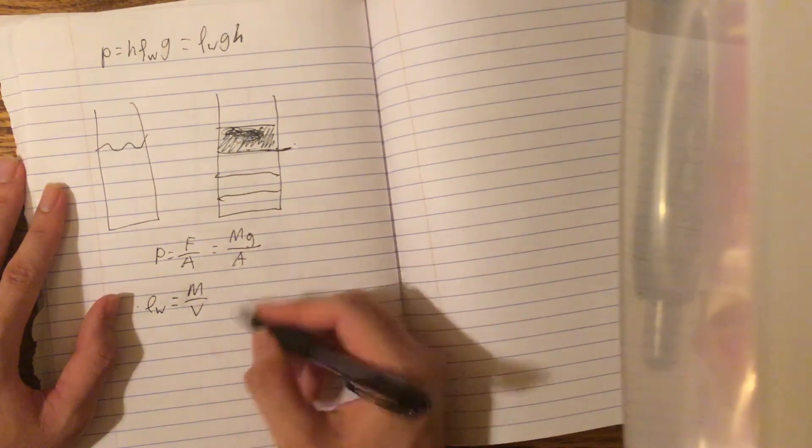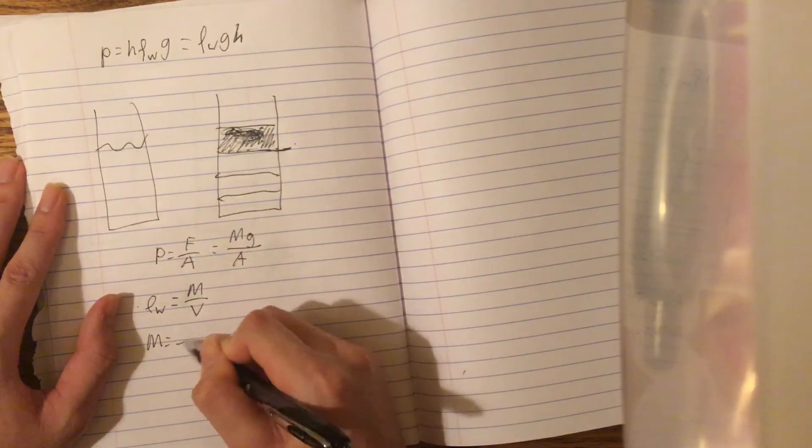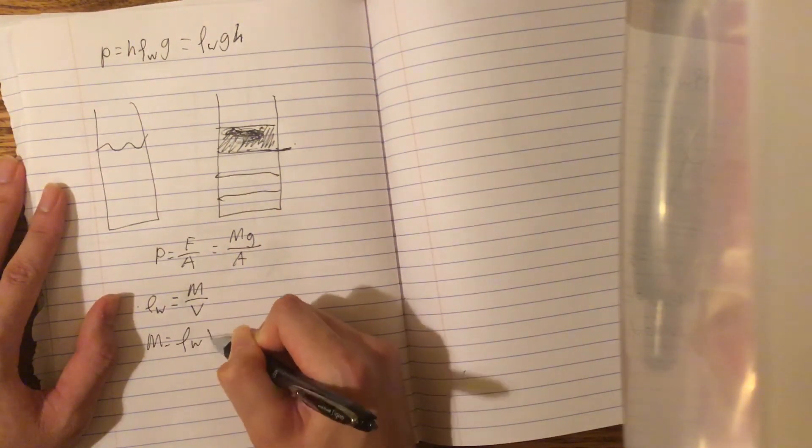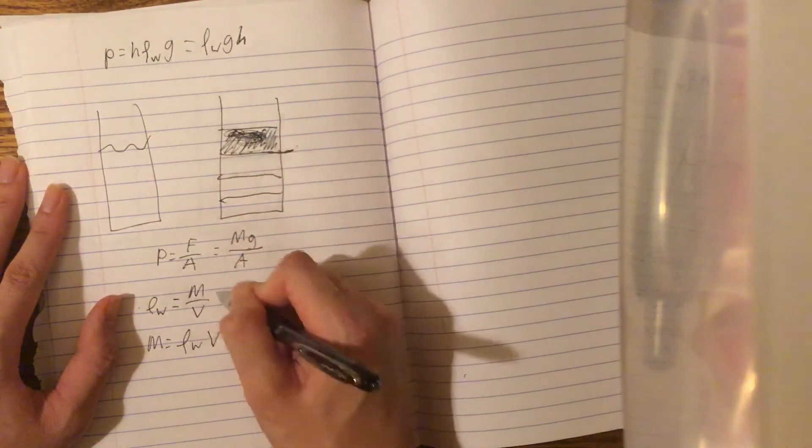So hence, mass equals ρw times volume, volume of this block. So mass of this block over volume of this block equals the density of water.